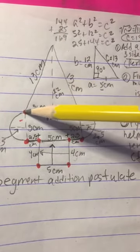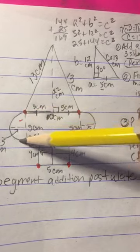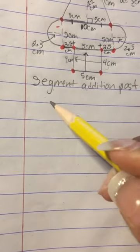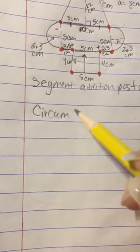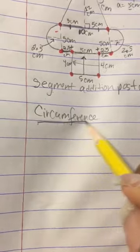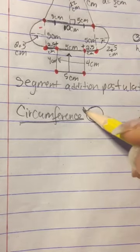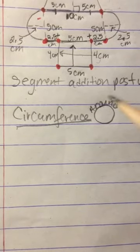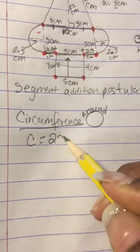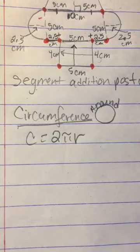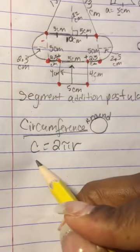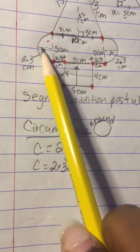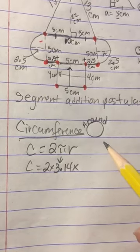That is also the same 13 centimeters here. We need to know the circle measurement, so we have to use the circumference formula. Circumference finds the measurement around the circle, and the formula is C equals 2 pi r. So circumference equals 2 times pi, which is 3.14, times the radius.